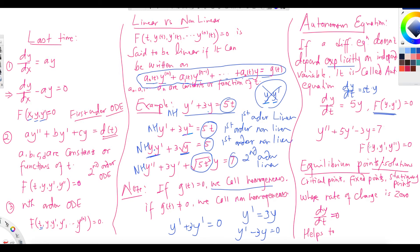The last terminology is equilibrium points or equilibrium solutions of a differential equation, also called critical points, fixed points, or stationary points. These are the points where the rate of change is zero — where the derivative is zero. To find equilibrium points, you set the derivative equal to zero and then solve for y.